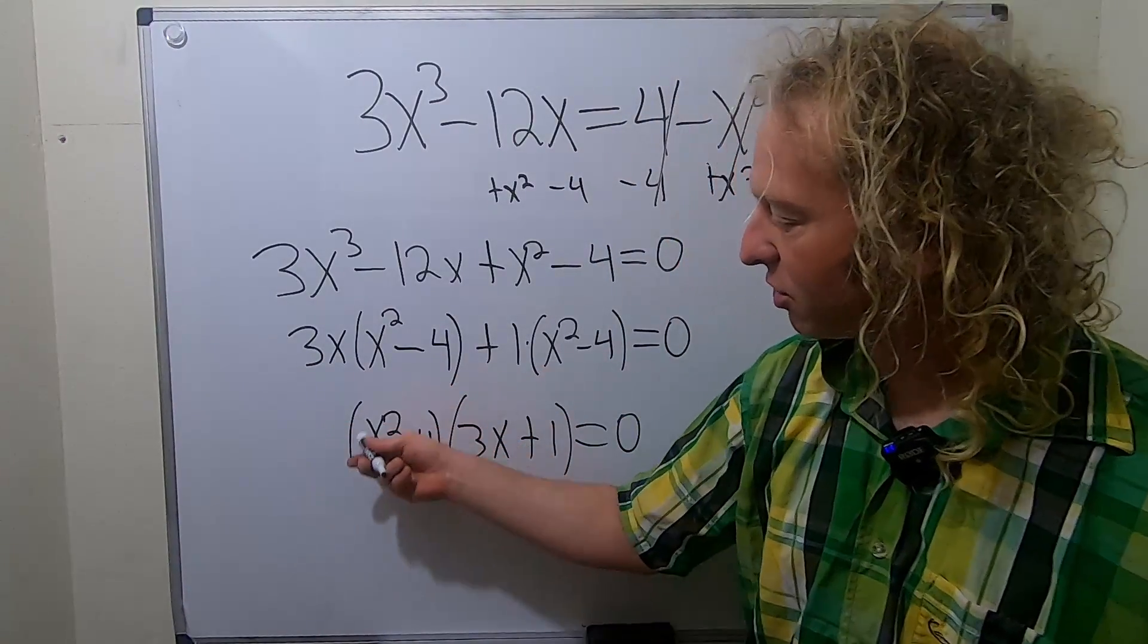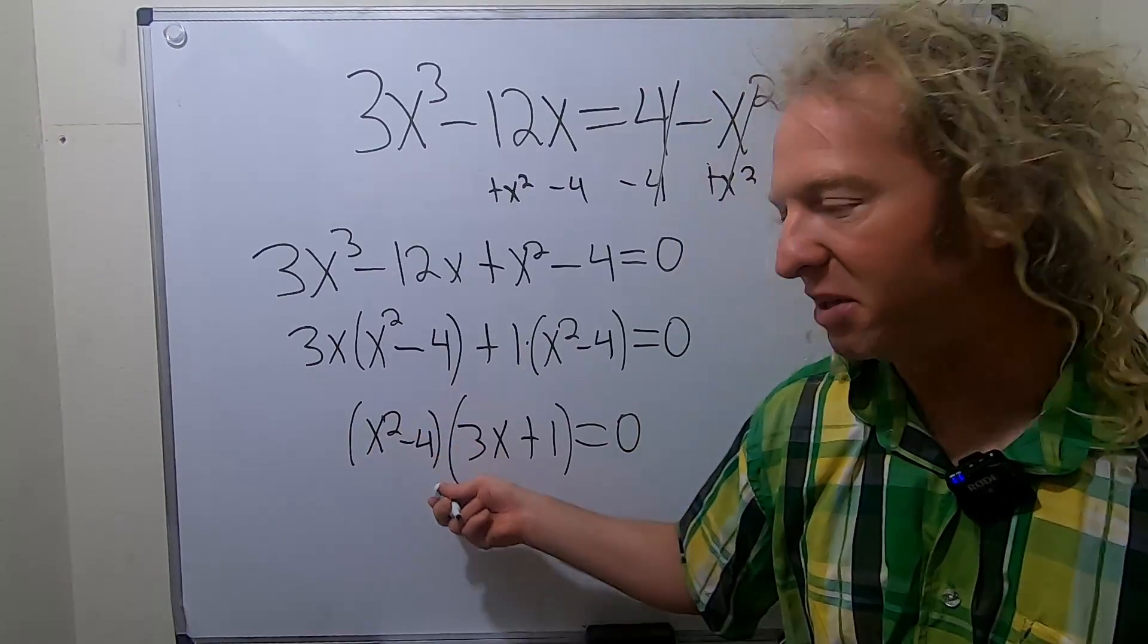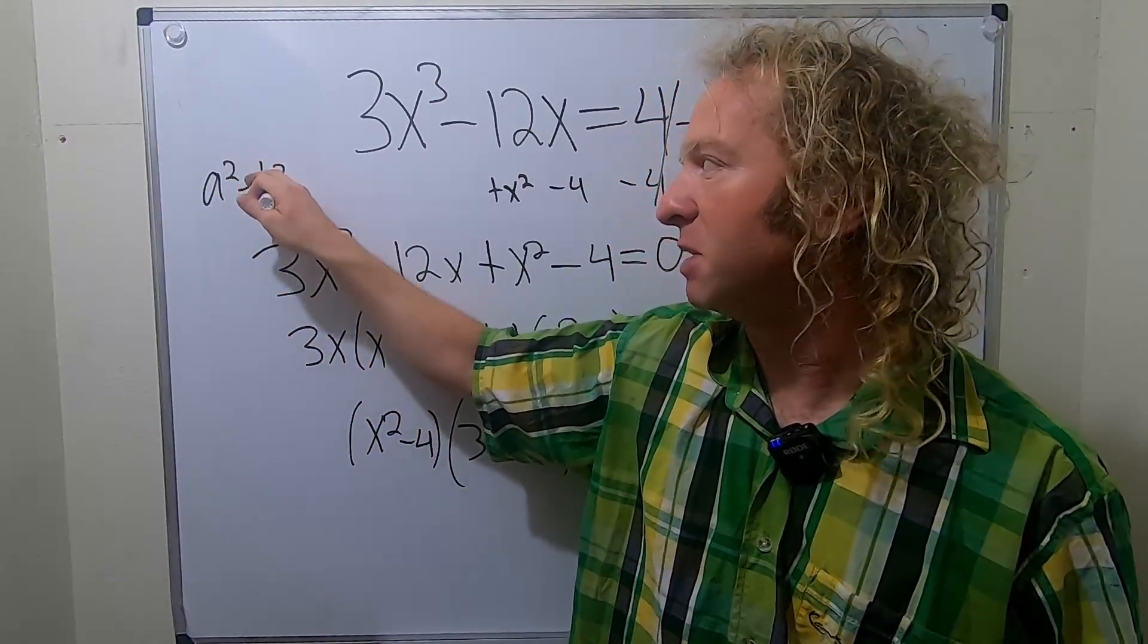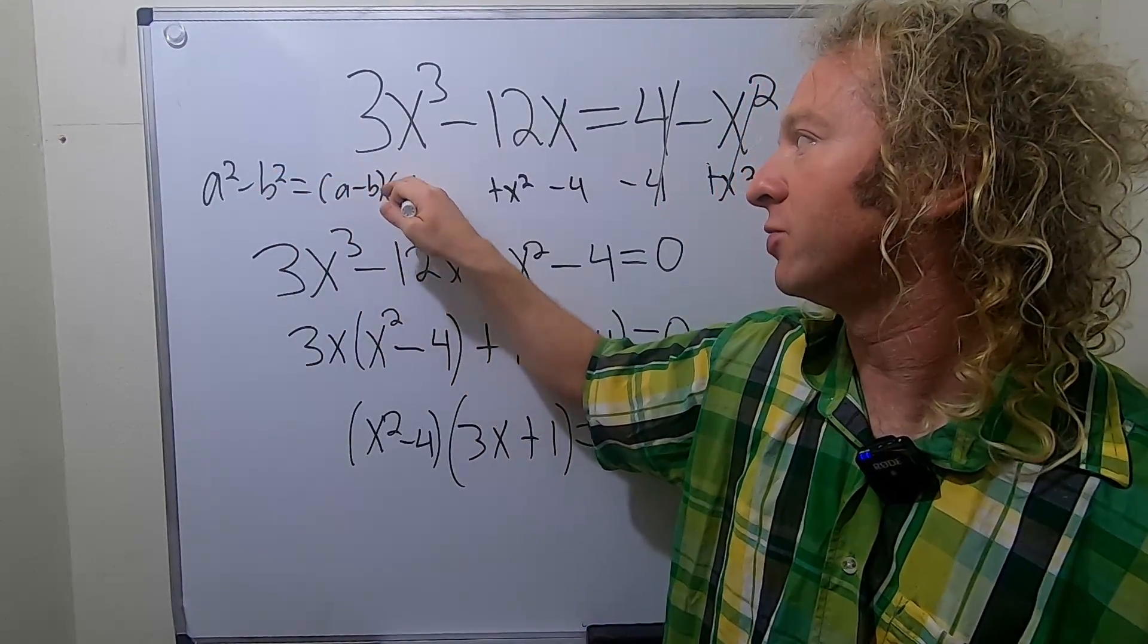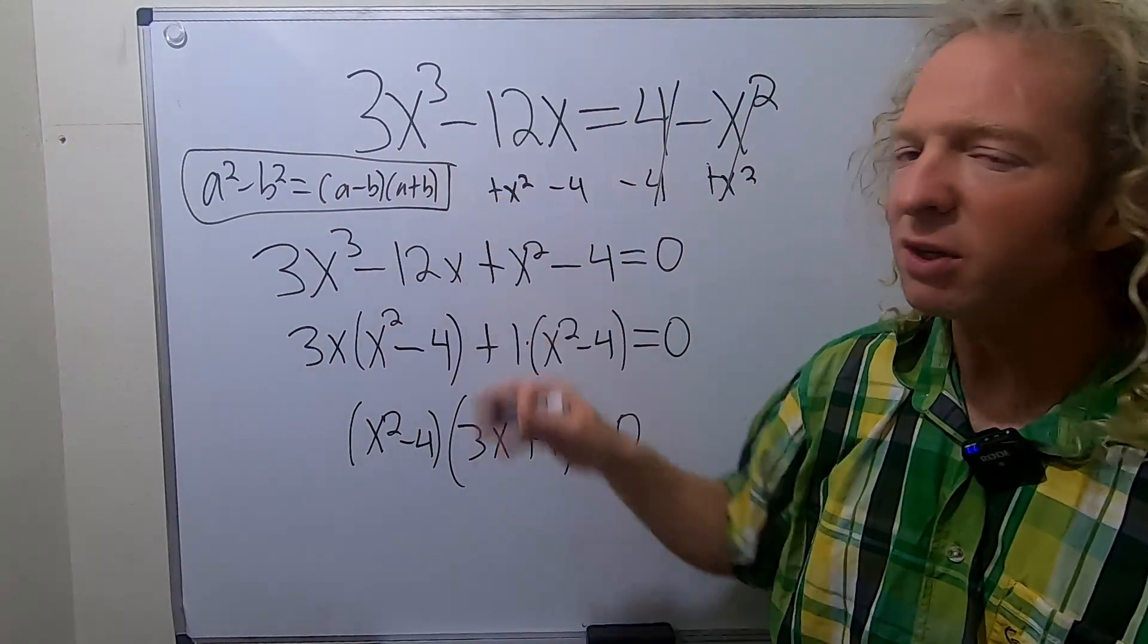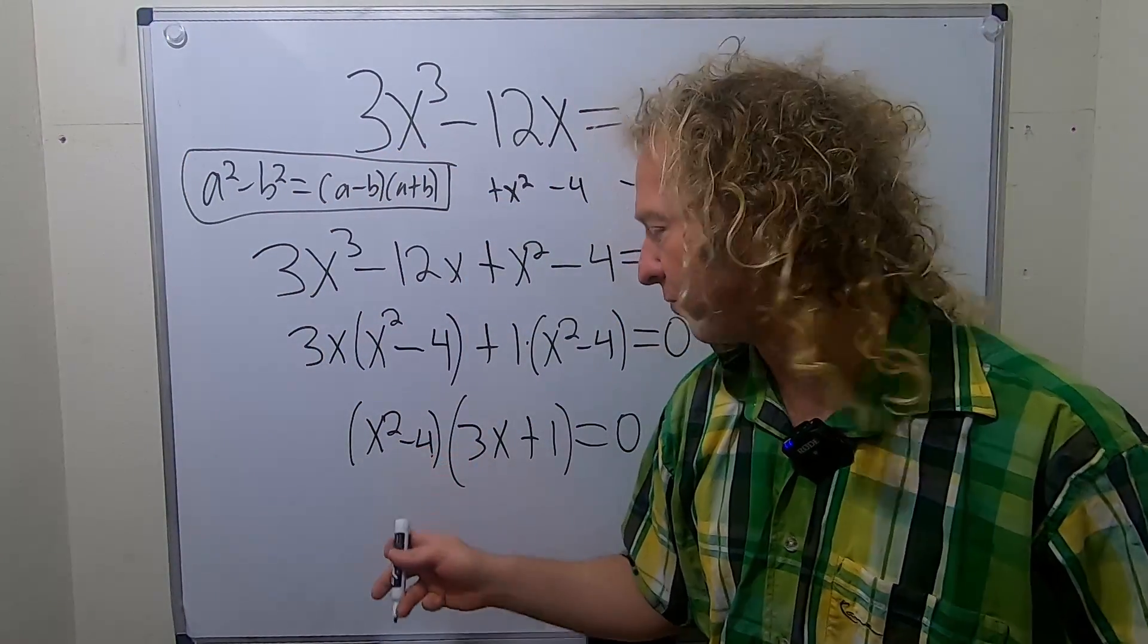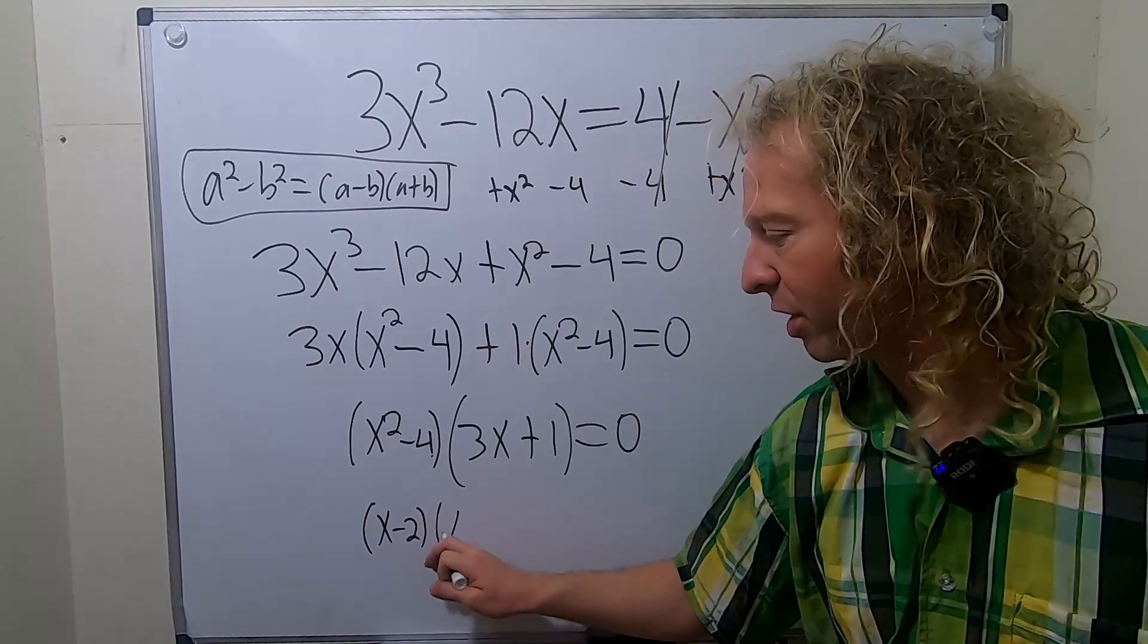This is a formula. This is called the difference of squares formula. It's a squared minus b squared. If you think back, I'll show all the steps. a squared minus b squared is a minus b, a plus b. It's one of the main formulas you learn in math. It's called the difference of squares. So here your b is 2. 2 squared is 4. So this will be x minus 2. Your a is x. x plus 2.